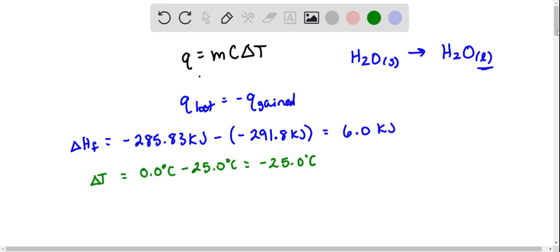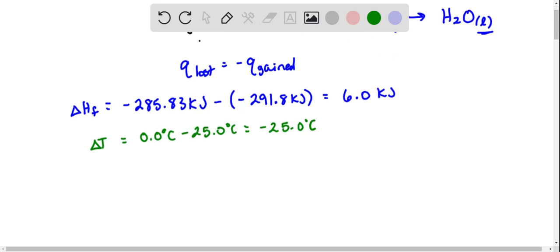Now when you are doing this, we have q lost equals negative q gained, but the q lost is not going to be calculated by doing mc delta T because this is a change of state. Whenever you change state you have to take your number of moles times your delta H of, in this case, fusion. So we calculated what that value is, that's why they gave us the numbers to begin with.